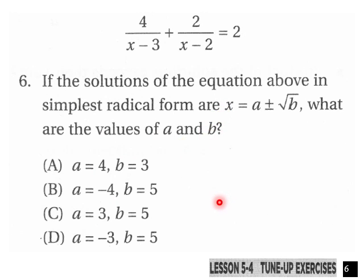And then number six here, you have the situation here of the solutions of the equation above in the simplest radical form are x equals a plus or minus square root b over 2b. What are the values of a and b up here?